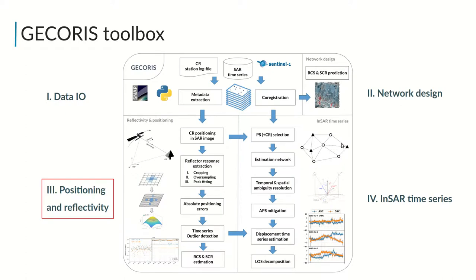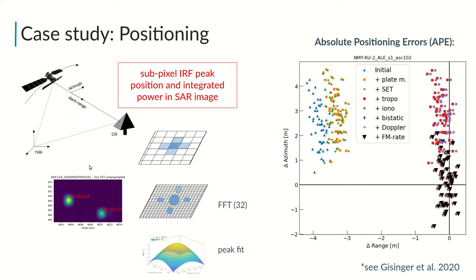Once the reflectors are installed, the second module is used for their precise positioning and reflectivity analysis. We estimate the precise sub-pixel positions and power of the reflectors by FFT oversampling and peak fitting. We also include known positioning and timing corrections, such as datum differences or atmospheric delays, in case one would like to analyze the absolute positioning errors.